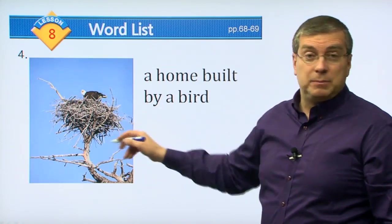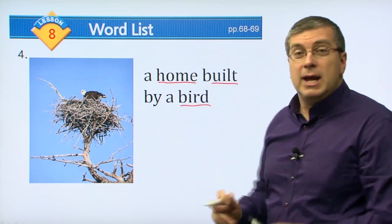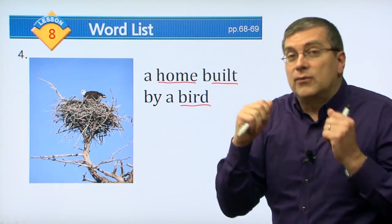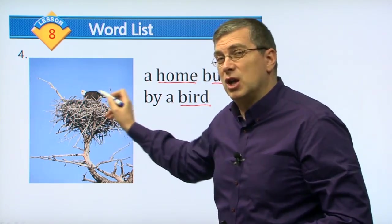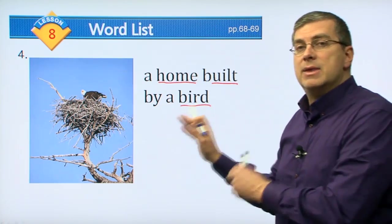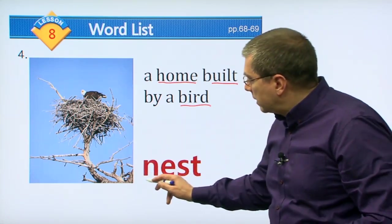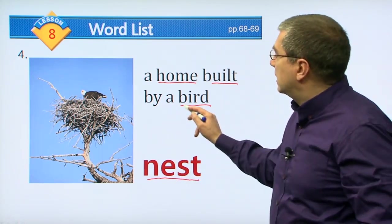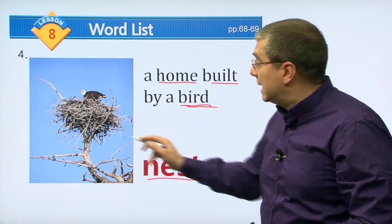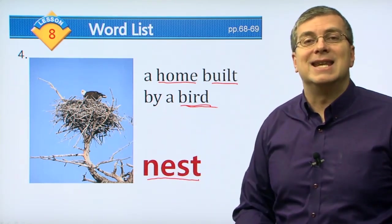Next, we saw this picture before - here is a bird. A home built by a bird. We talked about shelter, and we saw the squirrel looking out from its shelter. This is a type of shelter, but it's a special word for birds only. What do we call it? We call it a nest. When we talk about a nest, you should think: it's a bird. A bird makes a nest, and a nest is the home for the bird. It's their shelter. For birds, we say it is a nest.